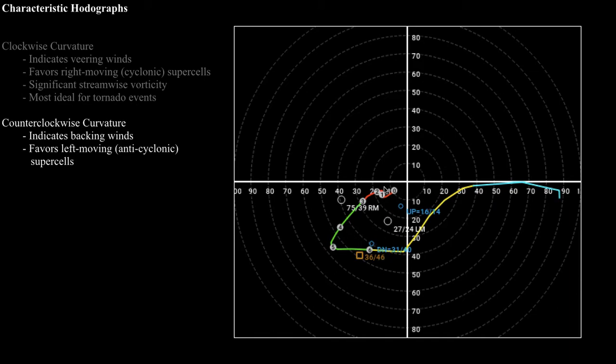If you happen to see something like this in the warm sector — the area of warm moist air ahead of a cyclone — that could be an environment favorable for anti-cyclonic supercells. However, they're very unusual because they're typically pulling their fuel supply from air that's north of them, which means they're pulling in cooler, more stable air, and that's not conducive for a supercell thunderstorm.